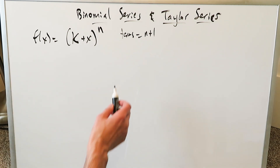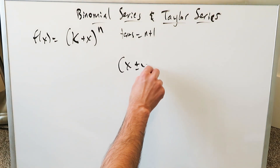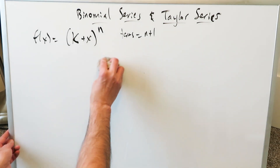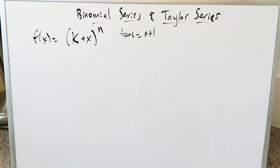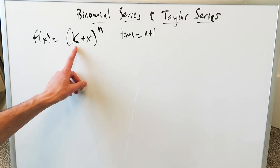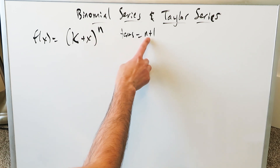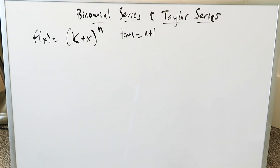This represents a function. Before we get too specific, (x ± y)^n represents a binomial, and you know how to expand this out using the binomial theorem. You can also expand it using the Taylor series centered around 0, and the end result in both cases is the same. I'm hesitant to use y as a variable, so I've used k: (k + x)^n. Whatever n is, the number of terms is n + 1. I'll expand this using the binomial theorem first, then show the exact same result using the Taylor series.